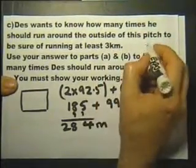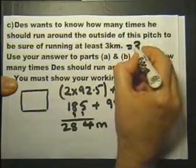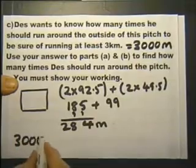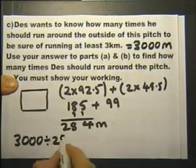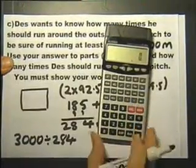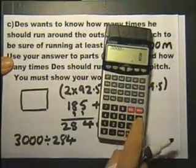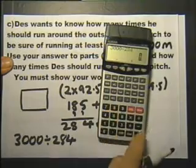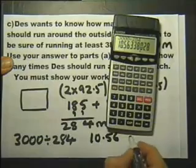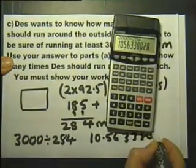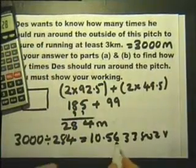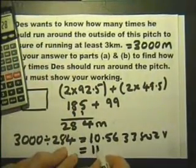So around the outside of this pitch is at least 284 metres. Now 3 kilometres is 3,000 metres. So if we work out this, we'll work out how many times he's got to go round the pitch. Now I think we'll go for this being a calculated question. And the answer comes to 10.56338028. So how many times should he run round the pitch? He should run round the pitch 11 times, I would say.